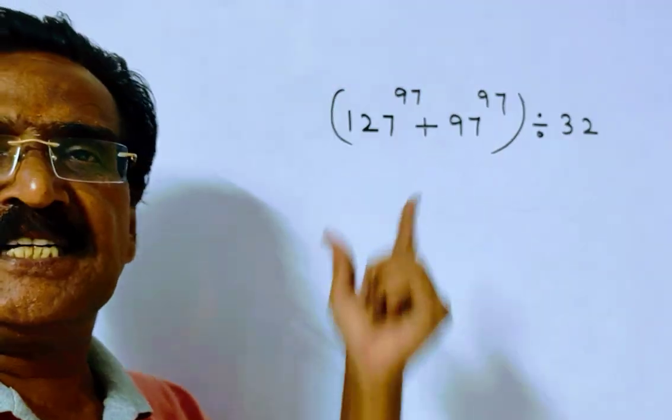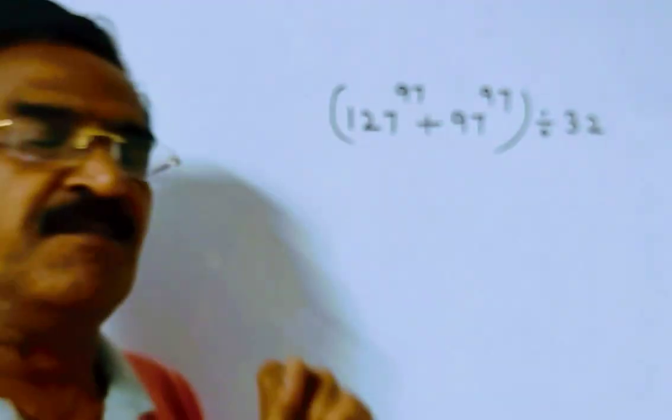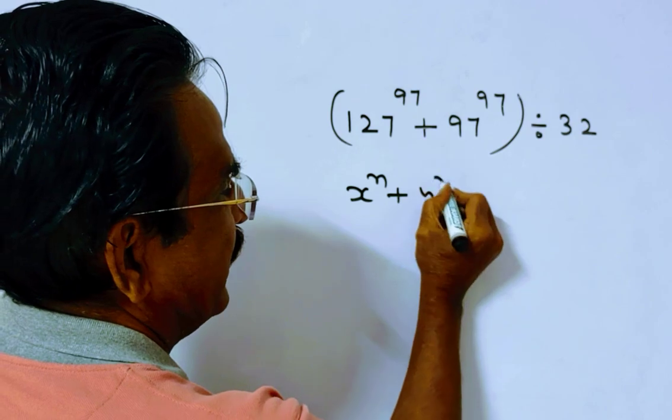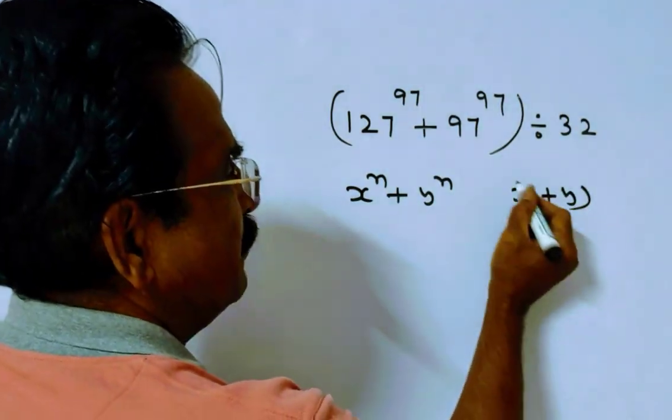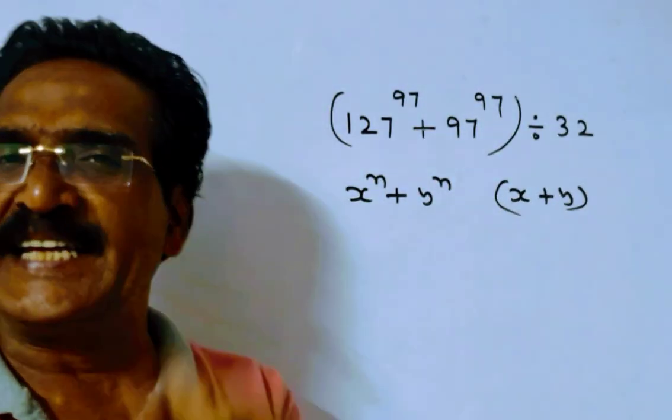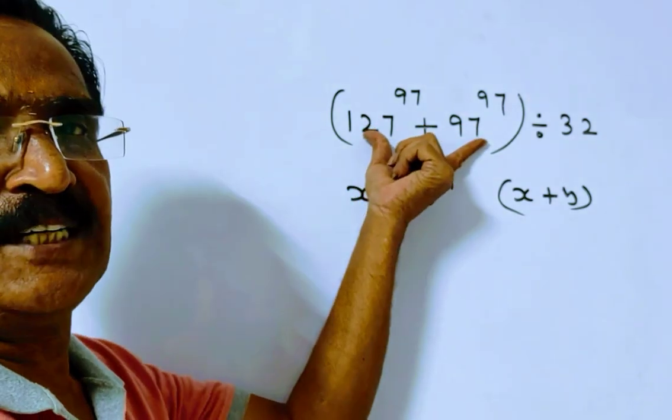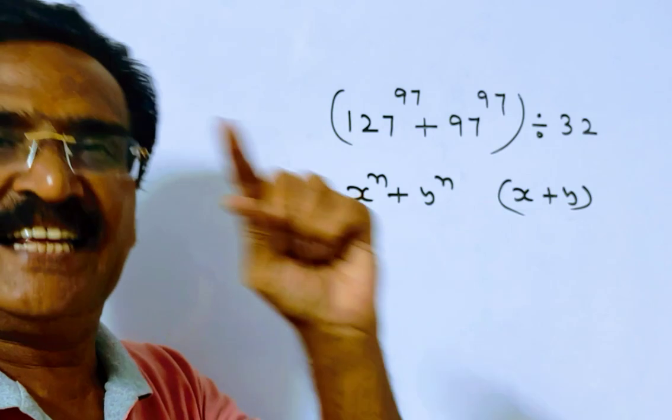Friends, the given expression is in the form of x power n plus y power n where n is odd. We know x power n plus y power n is divisible by x plus y for all odd values of n. Here n is odd, so this expression is in the form of x power n plus y power n where n is odd.